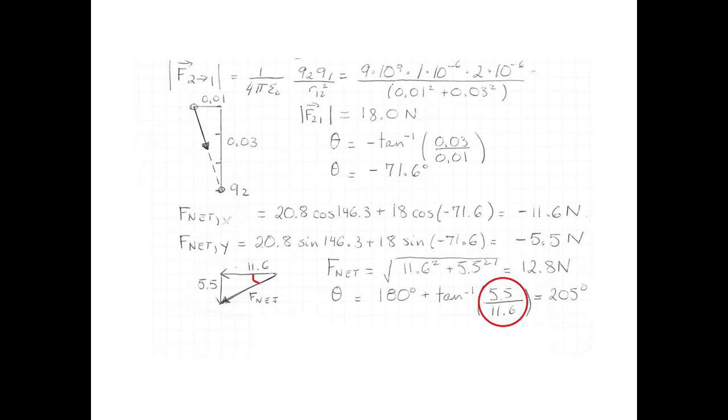Since it's in the third quadrant, the direction will be 180 degrees plus the inverse tan of 5.5, which is our opposite side, over 11.6, which is the adjacent side. And that's a total of 205 degrees.